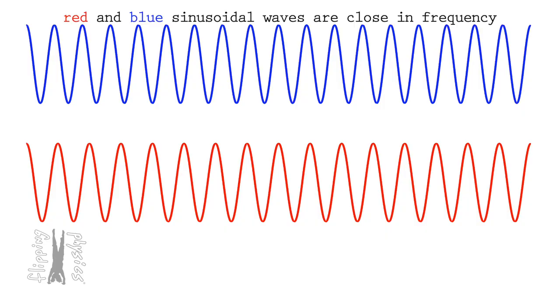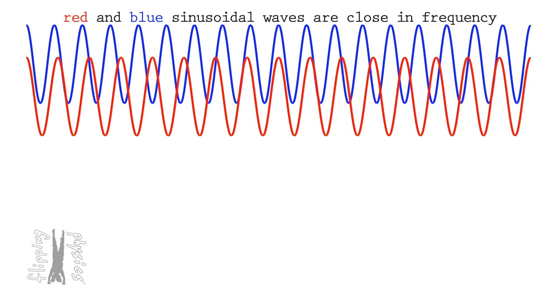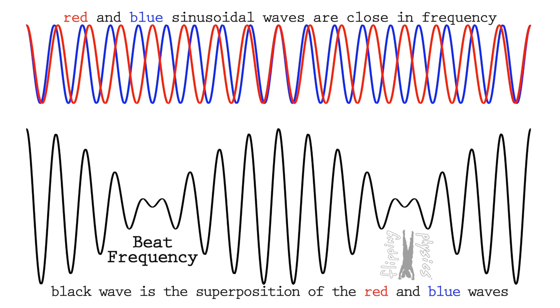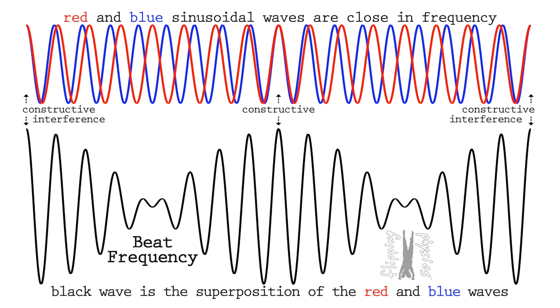Now that you know what beat frequencies sound like, let's make sure you know why beat frequencies happen. When two sinusoidal frequencies are close to one another in frequency, their two wave patterns look like this. Actually, let's overlap the two waves to better understand how the wave interference works. Hopefully you can see that the two waves alternate between being in phase and therefore constructively interfering with one another to create a larger amplitude, and then being out of phase and therefore destructively interfering with one another to create a smaller amplitude.